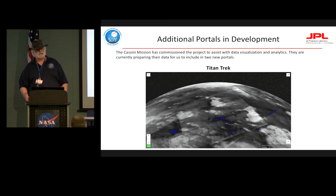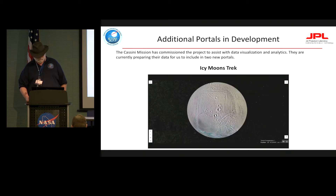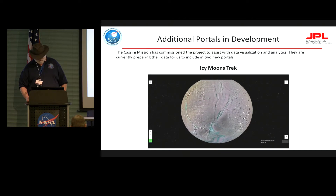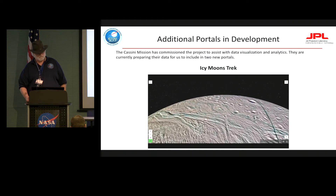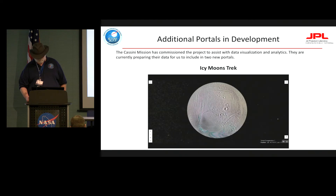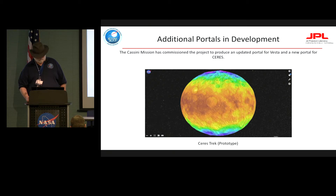The Cassini mission has engaged us to do visualization and analytics of data they are providing for Saturn's moons. By the end of this fiscal year, you will be seeing a Titan Trek, as well as the first release of Icy Moons Trek — the initial release will focus on Enceladus. Also, the Dawn mission has asked us to produce a Ceres Trek, providing us with that data, with the first release also by the end of this fiscal year.